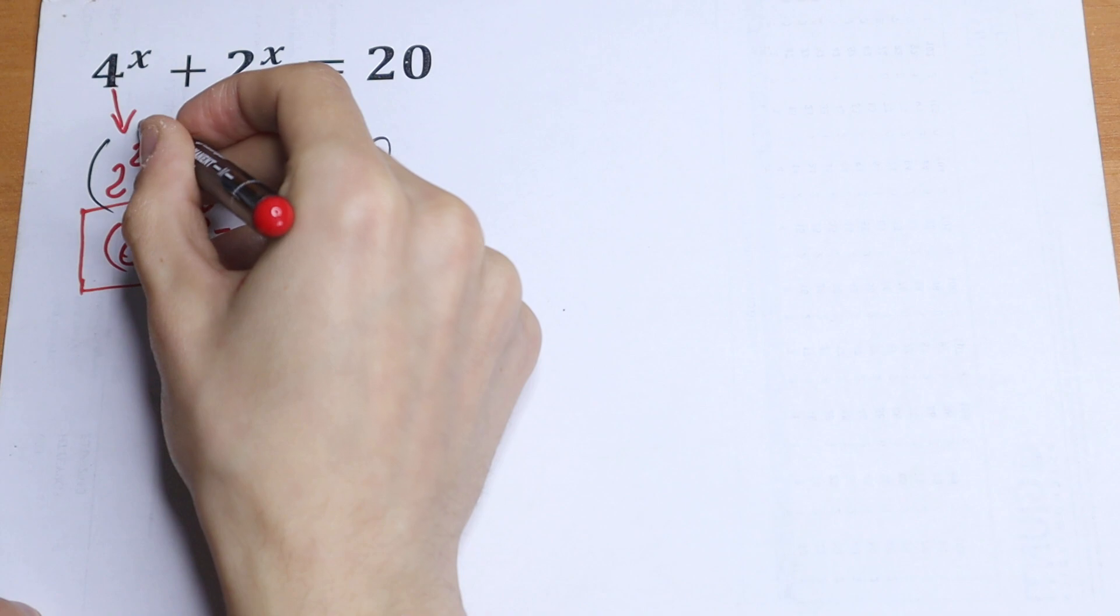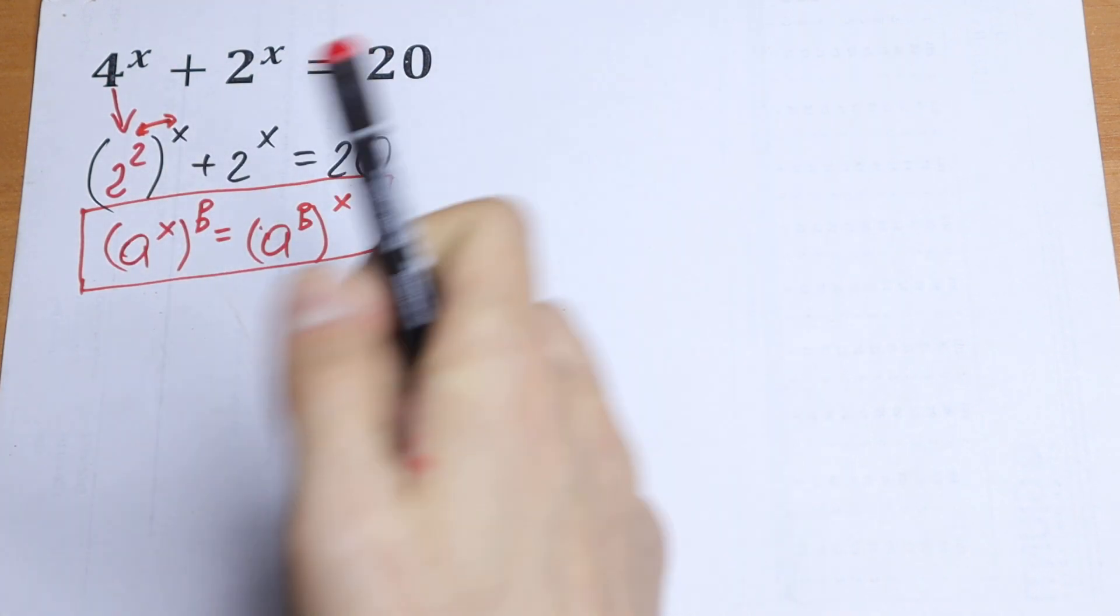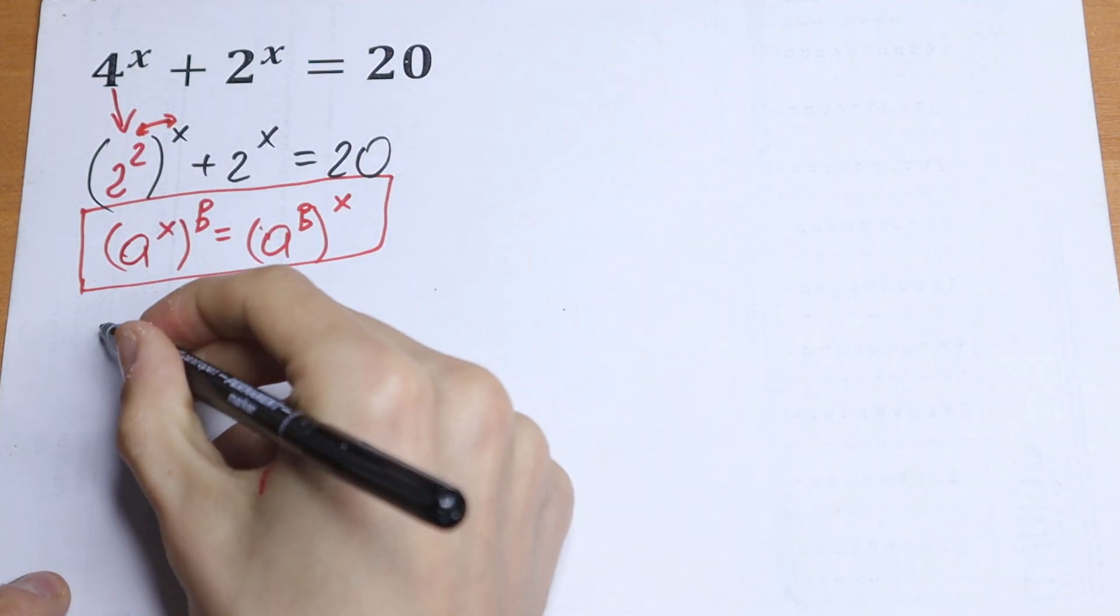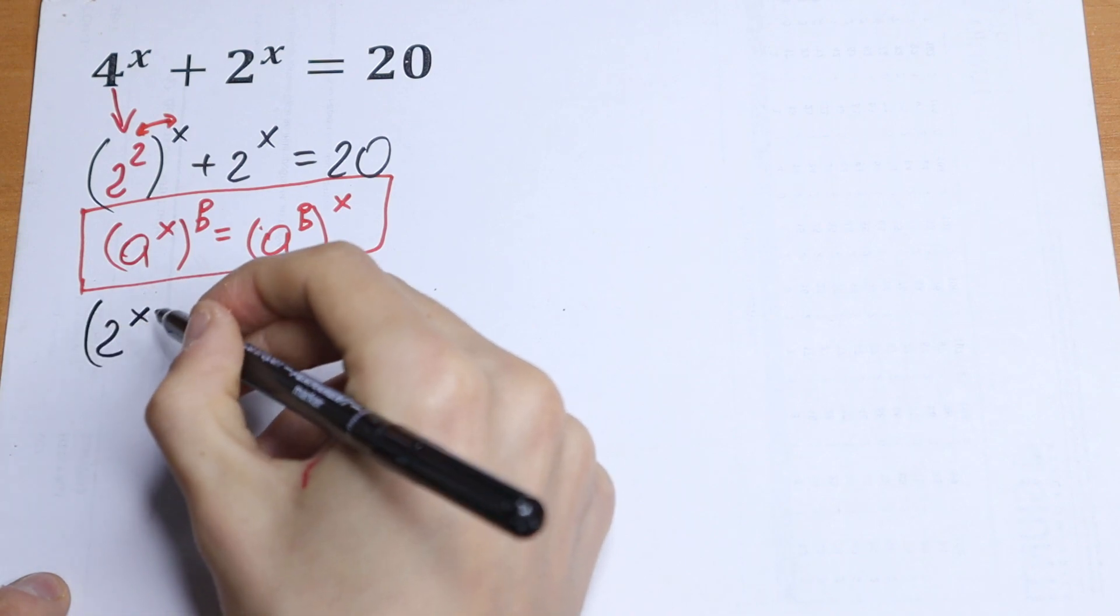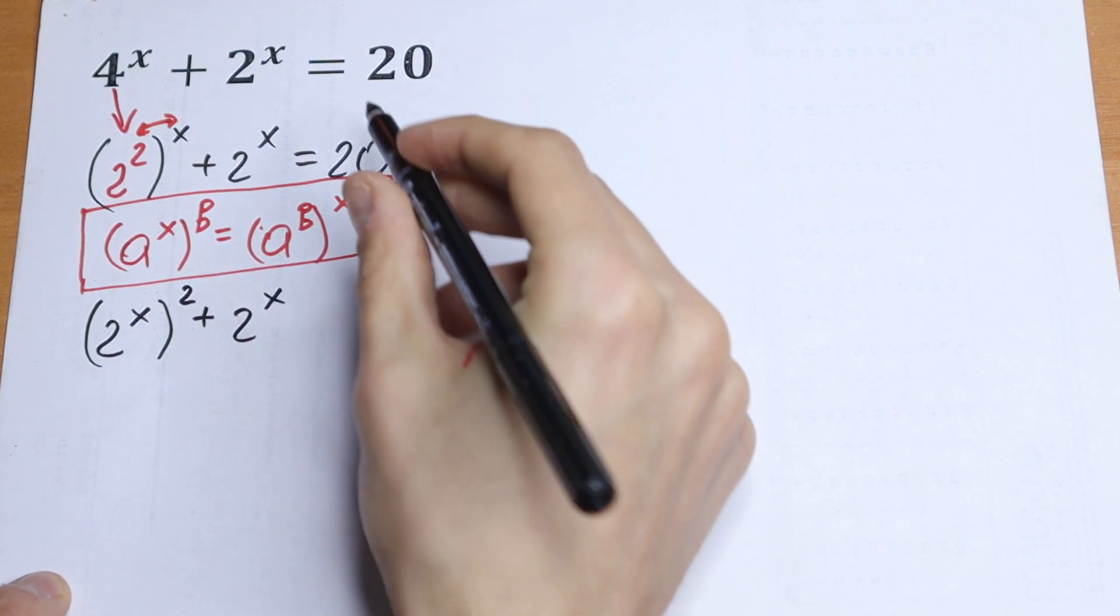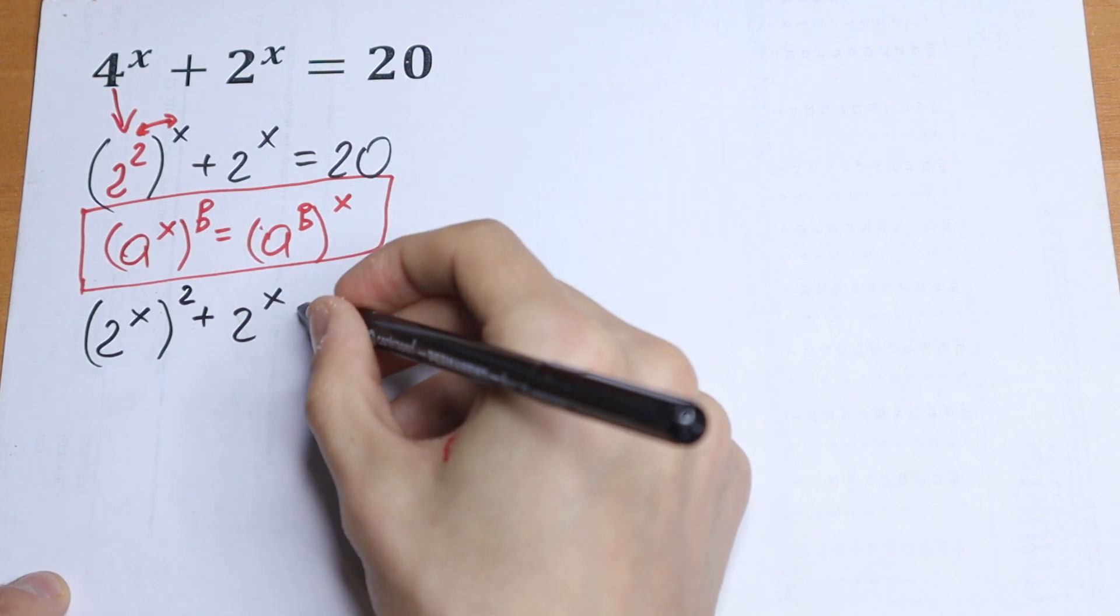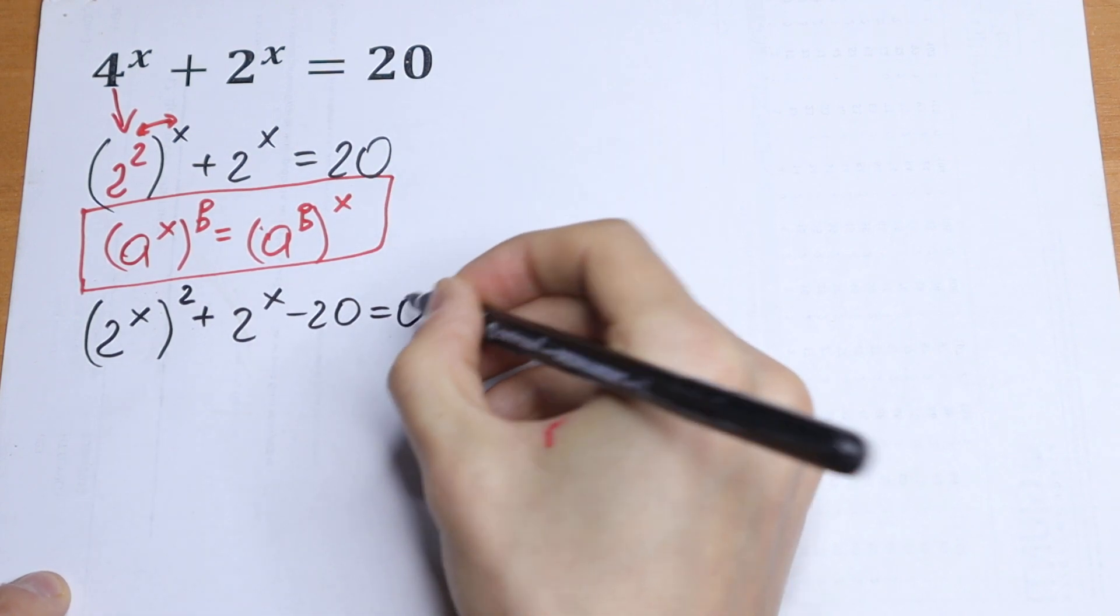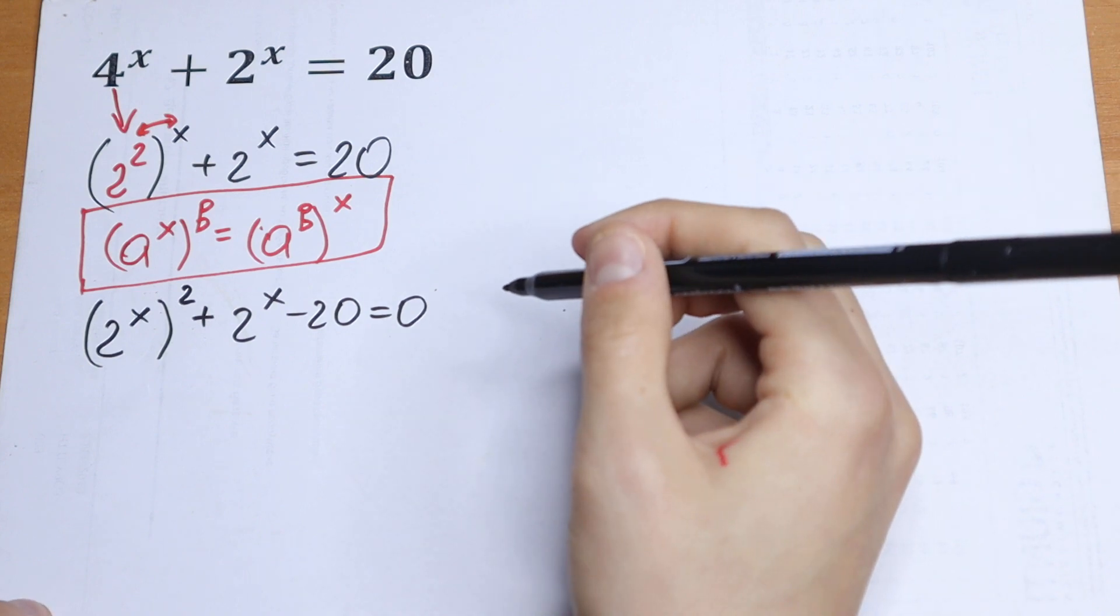And in our case we can swap this exponent, this power. So we will have 2 to the power x to the second power plus 2 to the power x, and I bring this 20 on the left: minus 20 equals zero.